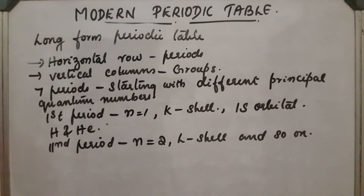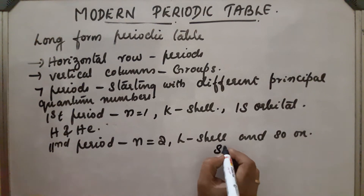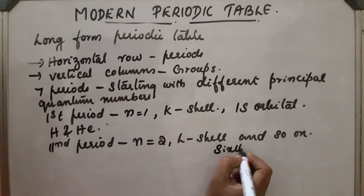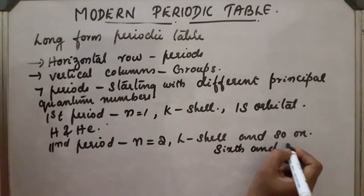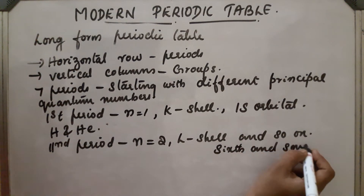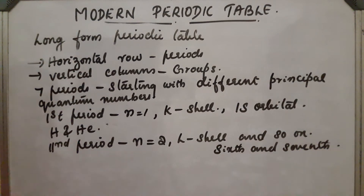In the case of the sixth and seventh periods, these are arranged separately at the bottom of the table.